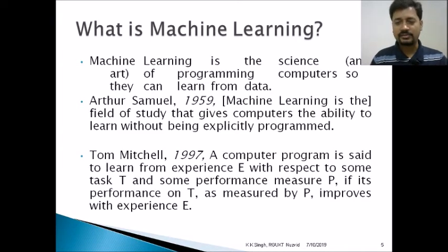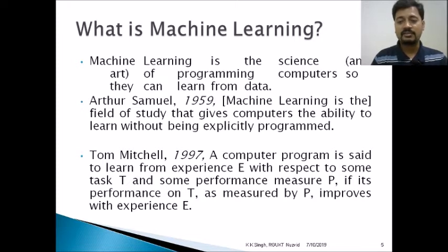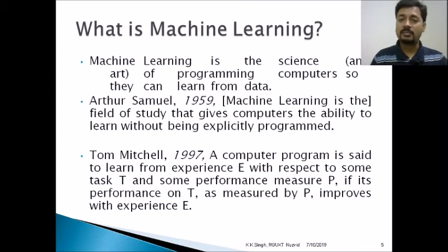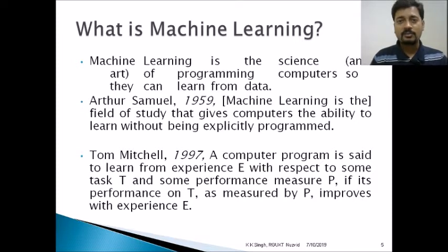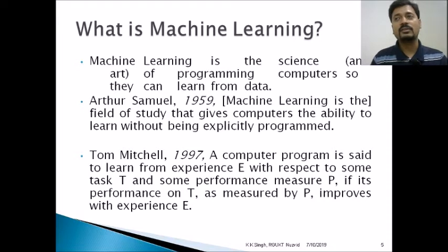Tom Mitchell defines: a computer program is said to learn from experience E, where experience is nothing but a set of data samples, with respect to some given task T and some performance measure P. If its performance on T as measured by P improves with experience, then once the performance increases over the learning, it is called learning.